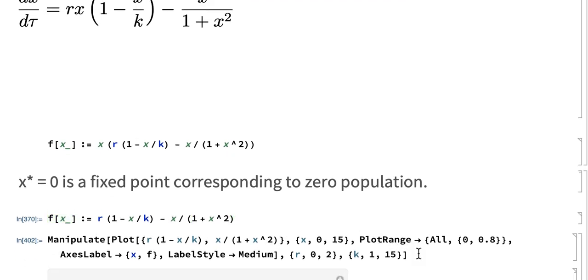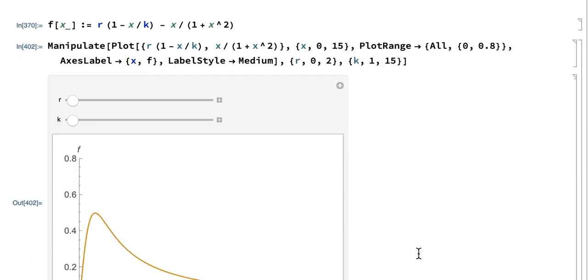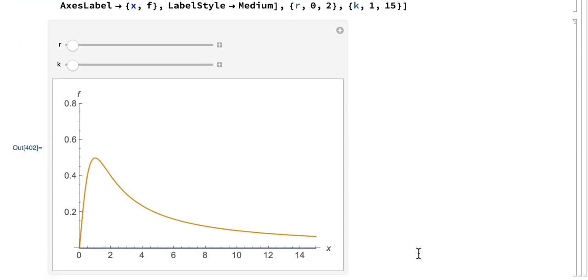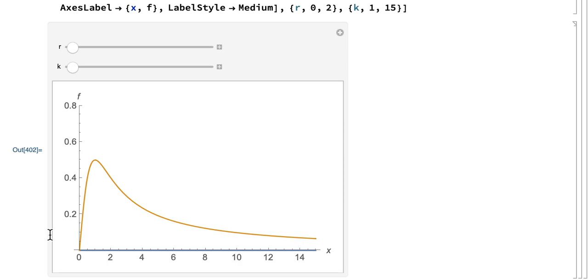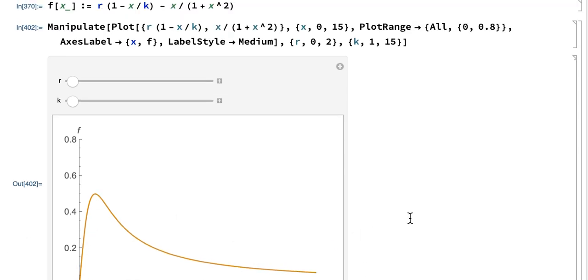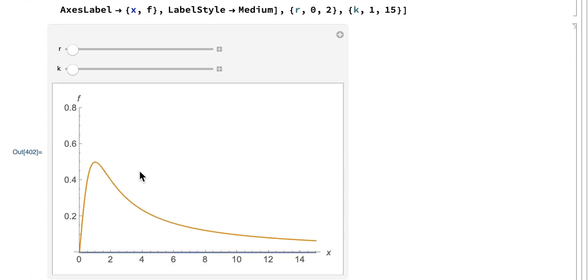And I'm going to plot using the manipulate command. So this is that curve associated with predation. And now I'm changing the two parameters associated with the growth rate. And you can see right now that at this parameter set, I have a low population.